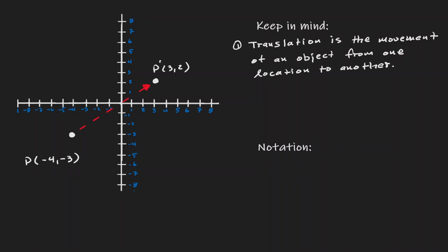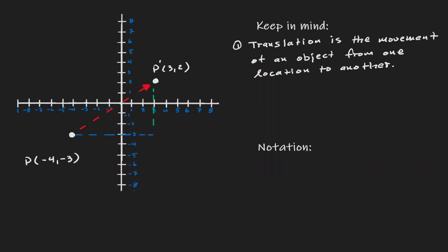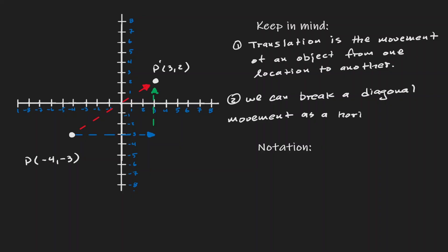But notice that we could also move that point P into the same location of P' by not moving diagonally, but moving it a certain number of units to the right and certain units up. In other words, we can represent a diagonal movement as a horizontal and a vertical movement. So this diagonal movement can also be represented as a horizontal and vertical movement, and we'll eventually get to the same location.